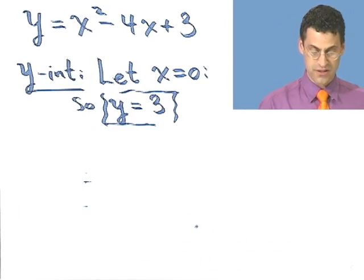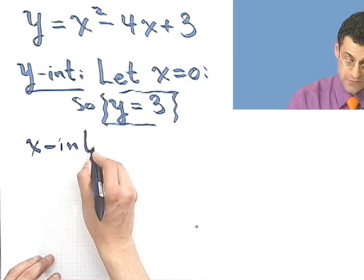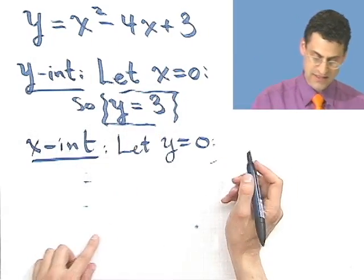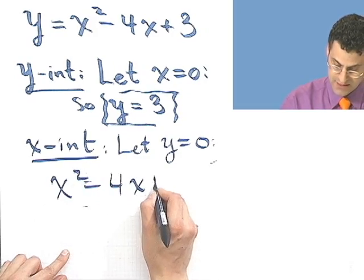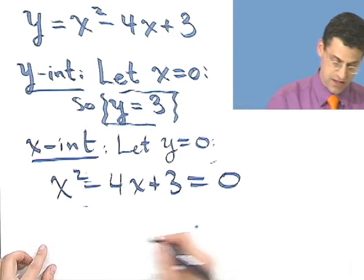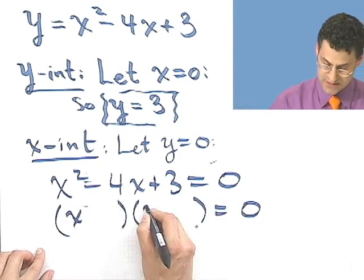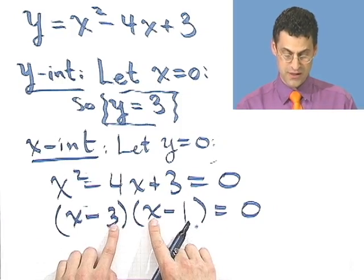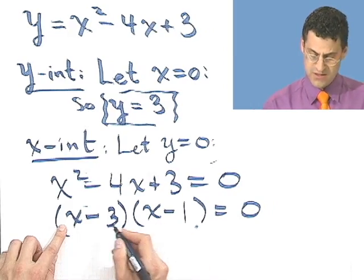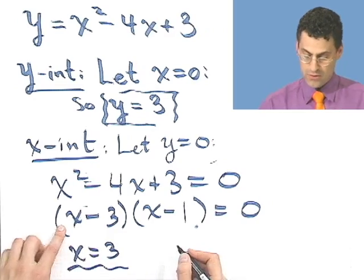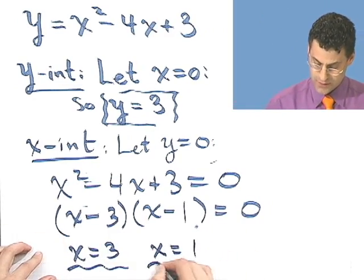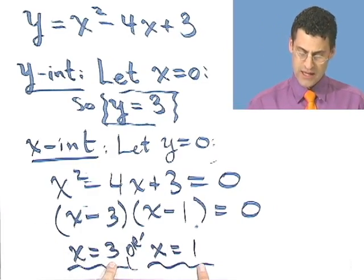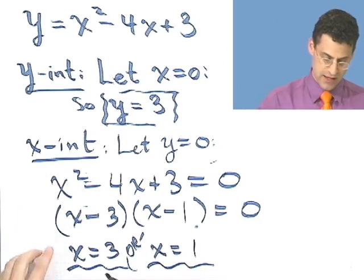What about the x-intercepts? To find the x-intercepts, I let y be 0 and solve for x. That gives a quadratic equation requiring some factoring. Setting x squared minus 4x plus 3 equal to 0, it factors as (x minus 3)(x minus 1) equals 0. So either x minus 3 equals 0, giving x equals 3, or x minus 1 equals 0, giving x equals 1. There are two x-intercepts at x equals 1 and x equals 3.